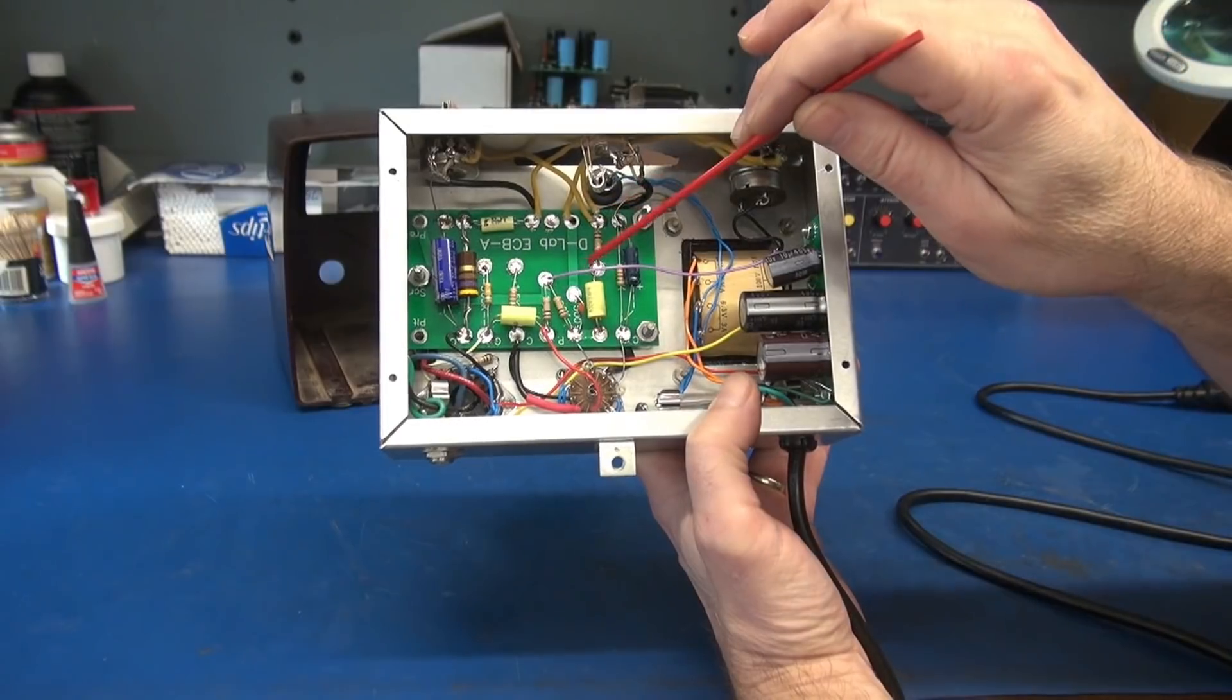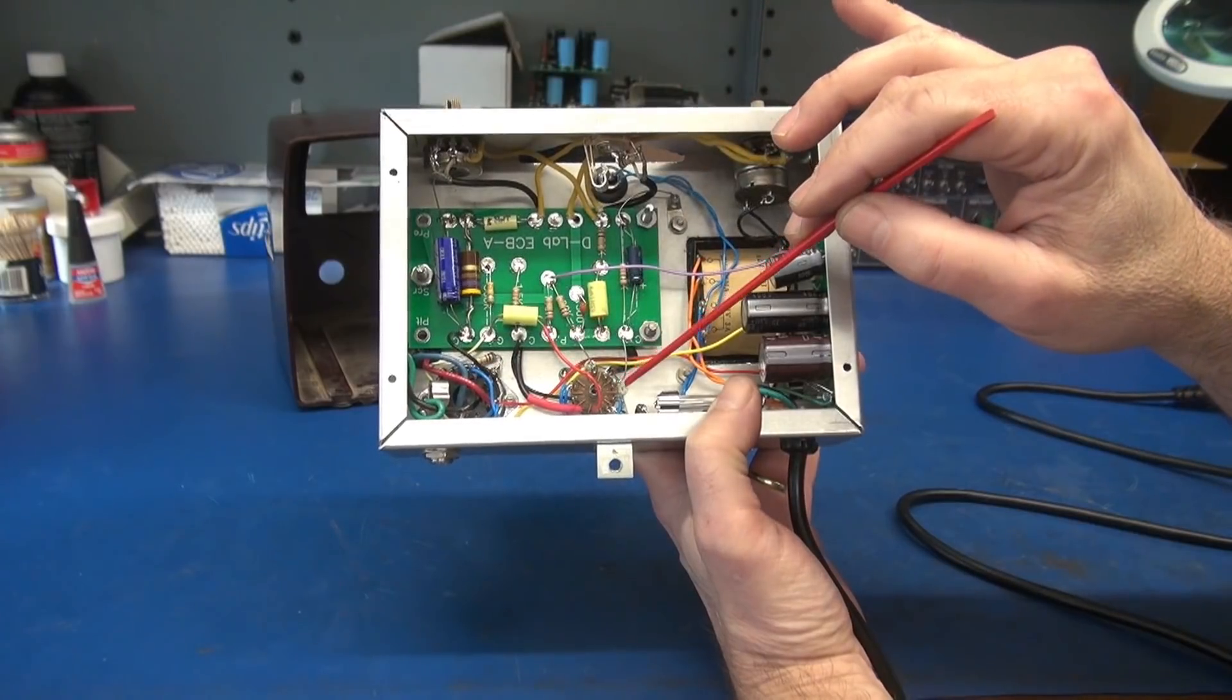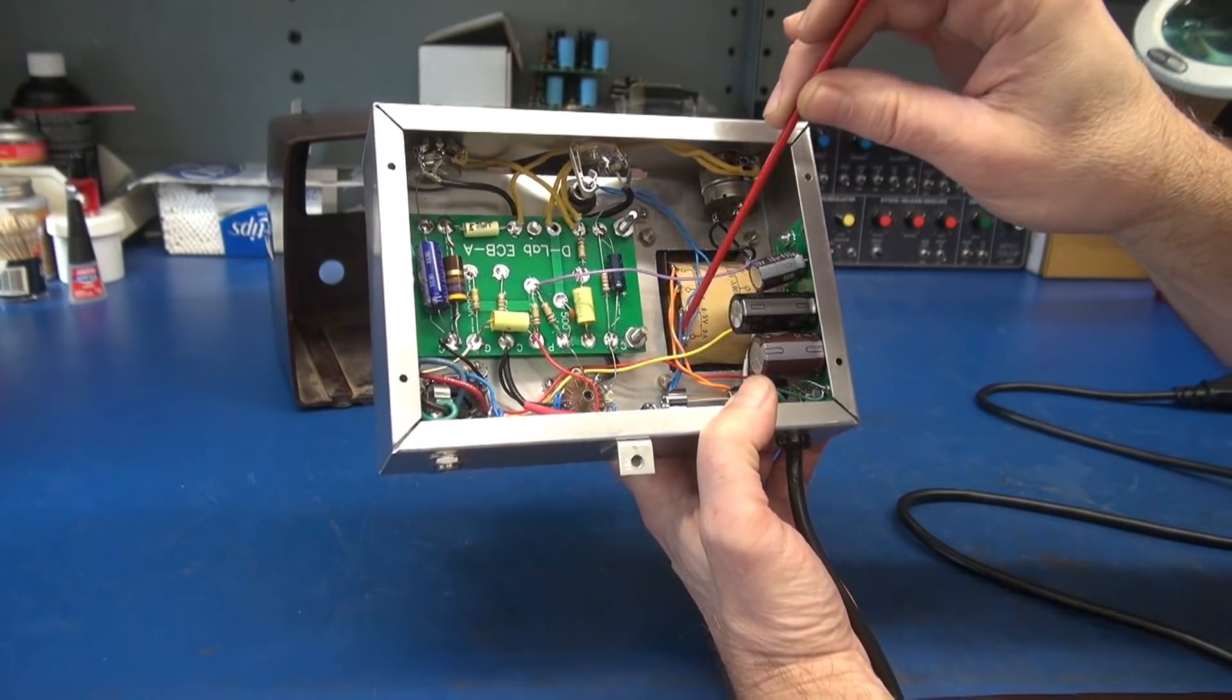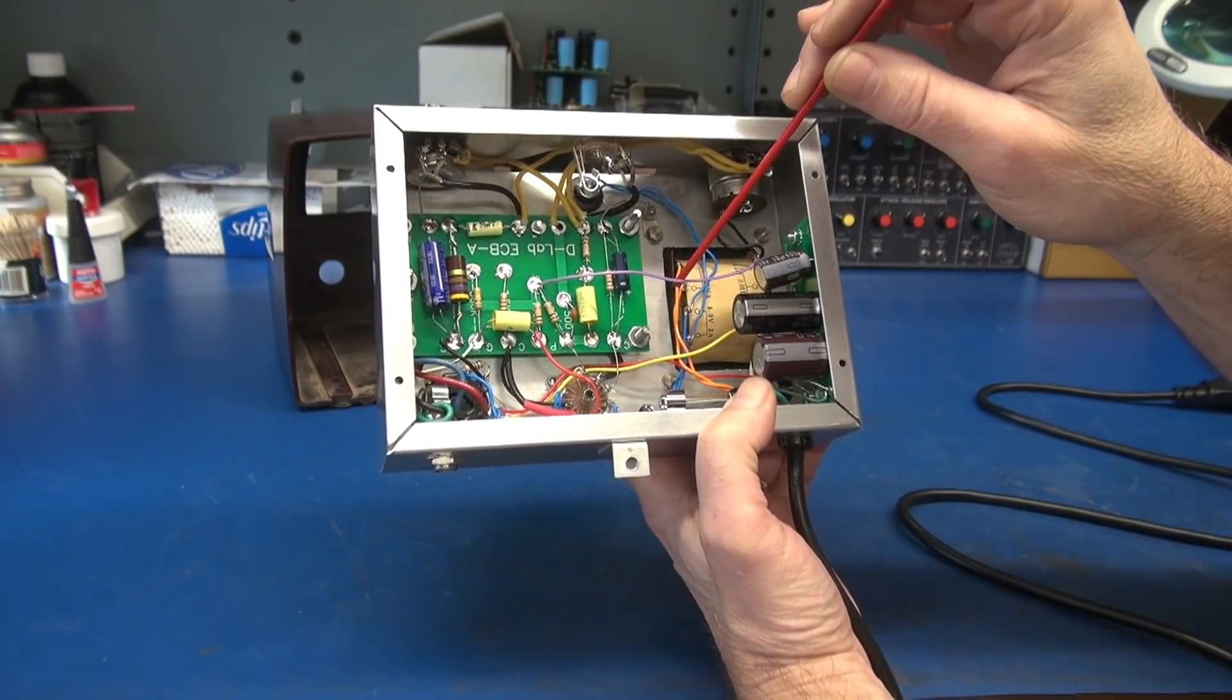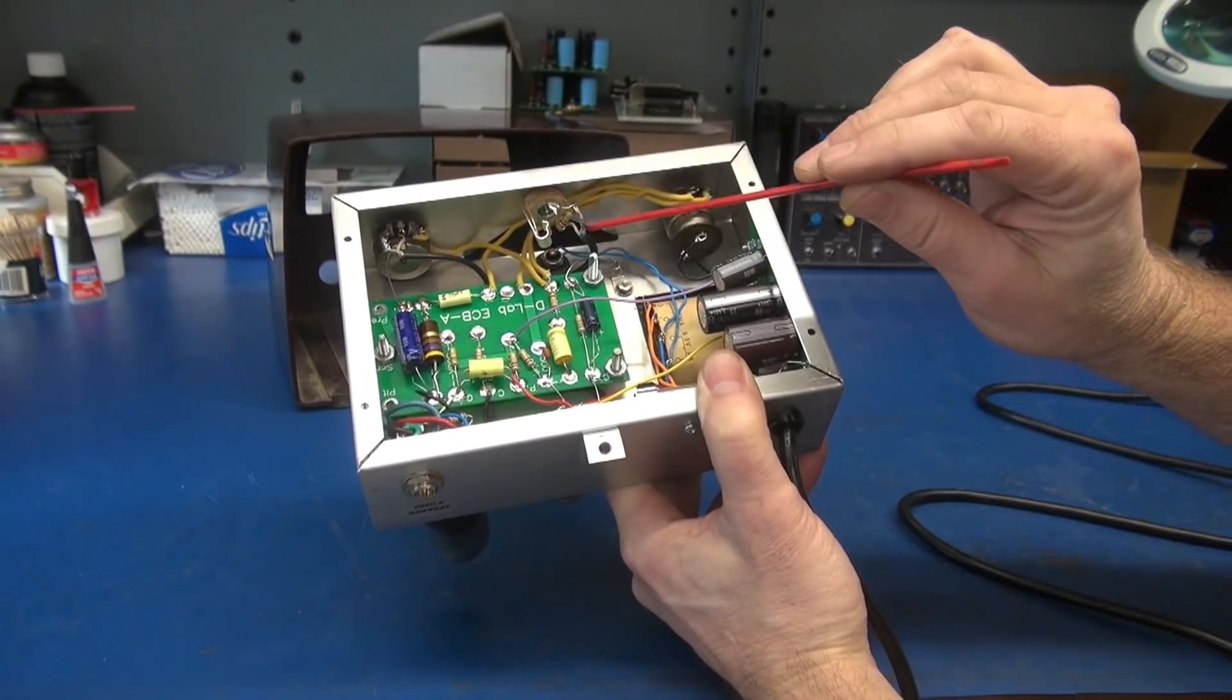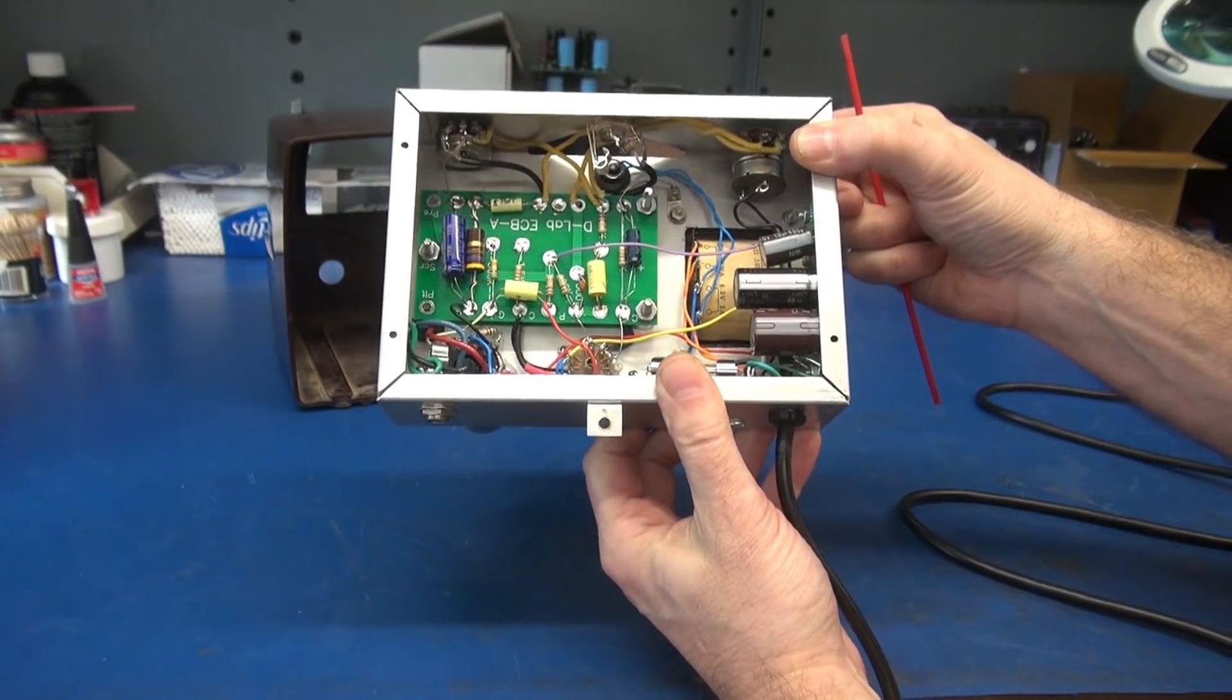Wiring of the little 2-watt 6V6 amp project is complete. Top side looks nice and clean. On the back I added a bracket to hold this down into the cabinet.